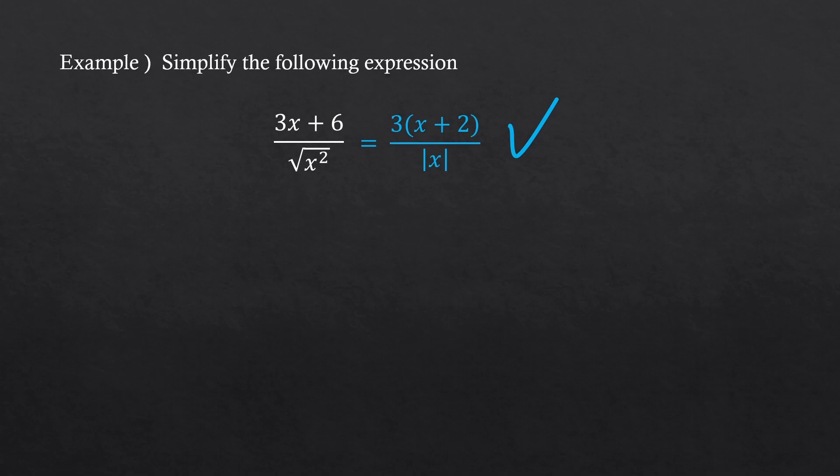But wait! If square root of x squared is already a positive number, can't we just use x instead of the absolute value of x? Like this?